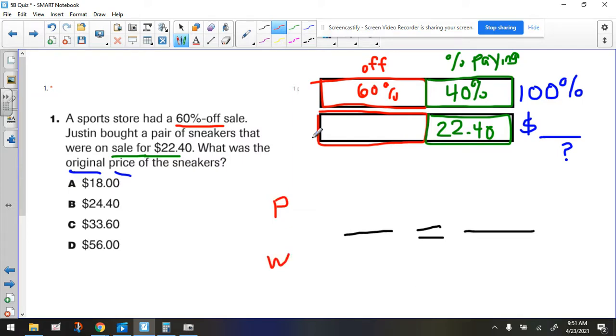Now, when we go to our tape diagram and figure out which chunk do we have all the information, is it the red chunk, the green chunk, or the blue chunk, we have all the information for the green chunk. So that's how we know how to start this thing.